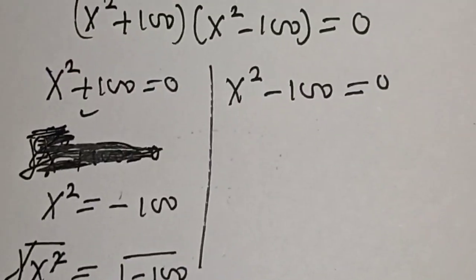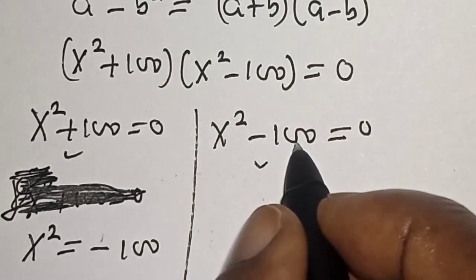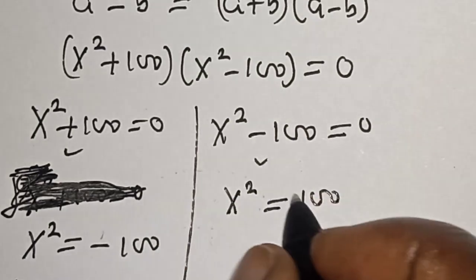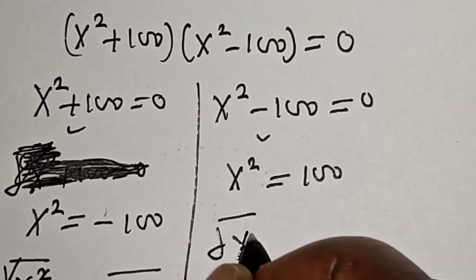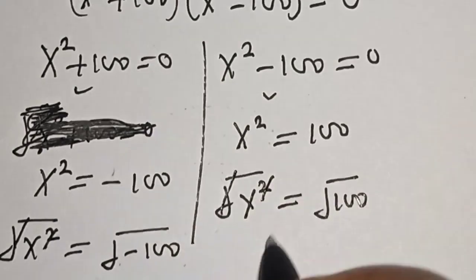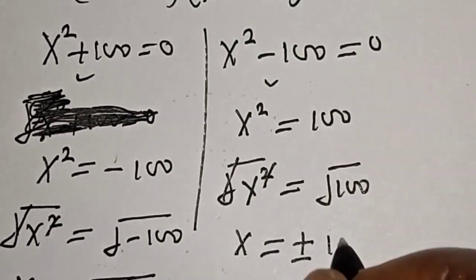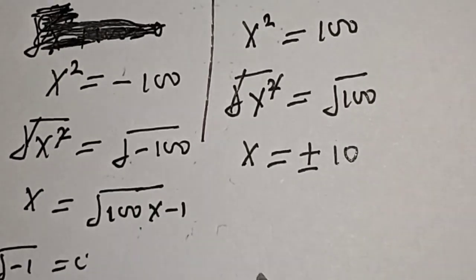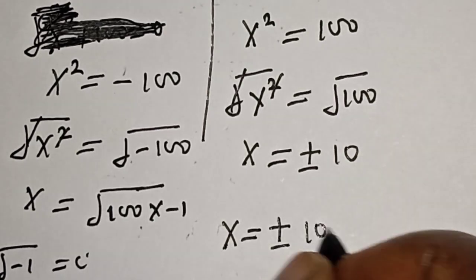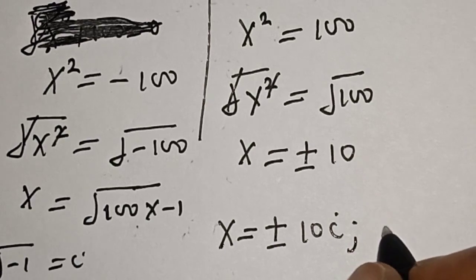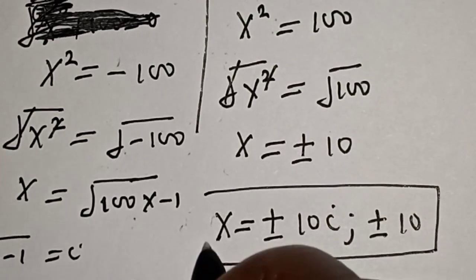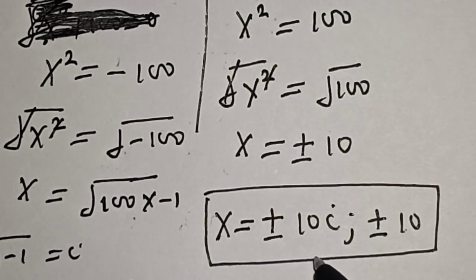Now let's solve the second case: s squared minus 100 is equal to 0. So s squared is equal to 100. Taking the square root of both sides, square root of s squared equals square root of 100, which gives s equals plus or minus 10. Therefore our final answers are plus or minus 10i and plus or minus 10. If you enjoyed the class, please don't forget to like, share, comment, and subscribe. Thank you.